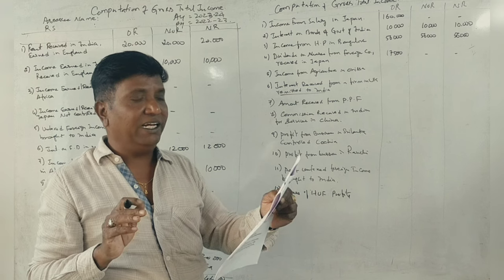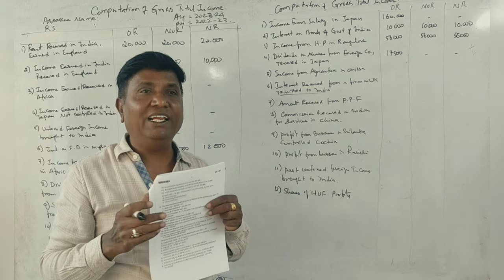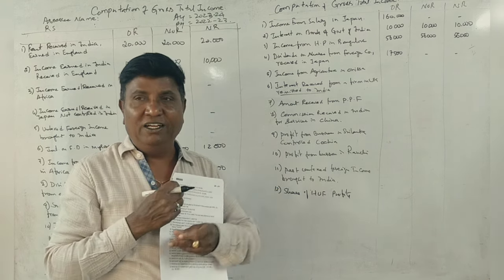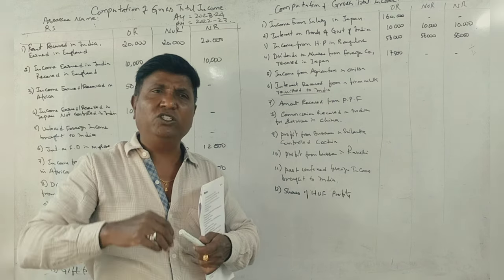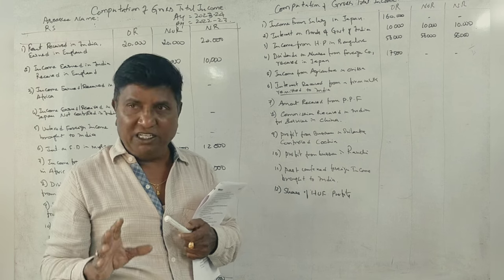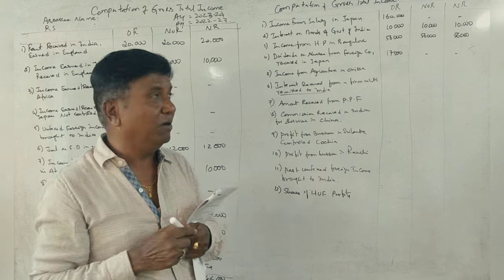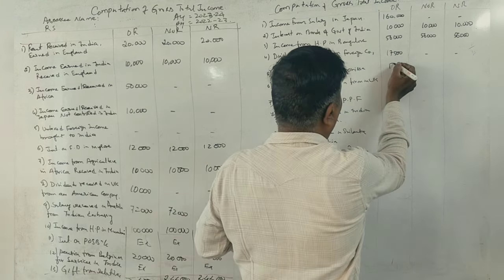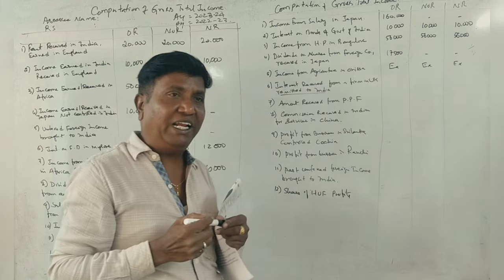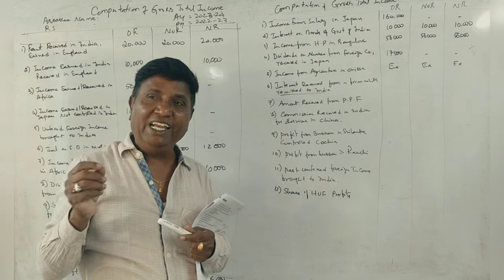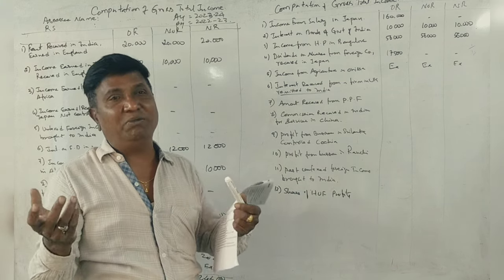Income from agricultural land in Orissa. Orissa, where is it? India. Now look, India is an agricultural income. You have S2 income, you have agriculture income, you have Indian income, you have an exemption for that income. That is, foreign agriculture income, taxable money. Indian agriculture income, exempted money.